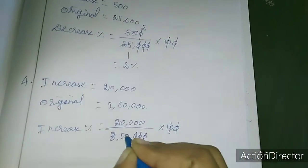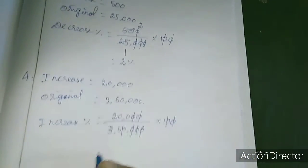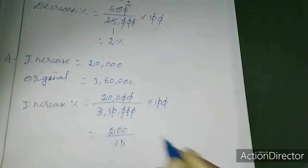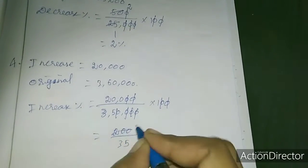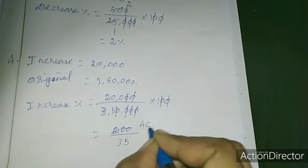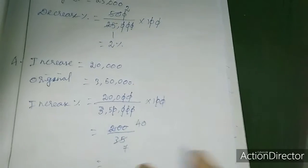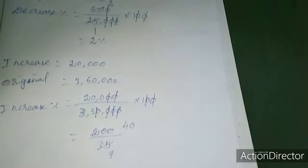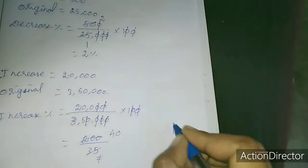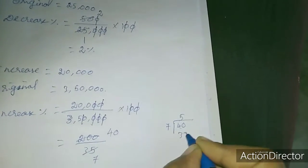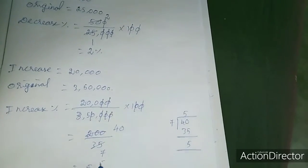After cancellation: 200 divided by 35. This simplifies — dividing further gives 40 by 7, which as a mixed fraction is 5 and 5/7. So the percentage price increase is 5 5/7%.